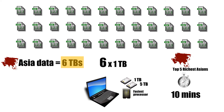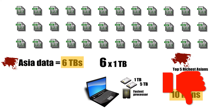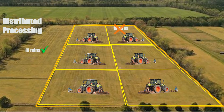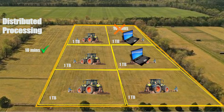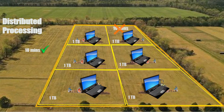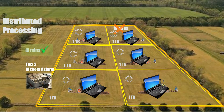This is the fastest processor in the market and it has a record that in 10 minutes it can process a maximum of one terabyte of data. Do you think one machine can process six terabytes in 10 minutes? It is impossible. Think of each portion of the field as one terabyte of data and each tractor as a laptop or machine. Each machine can process one terabyte in 10 minutes, so we start these machines simultaneously and after 10 minutes we'll have the top five richest Asians. This is called distributed data processing — distributing the processing of data among different machines working simultaneously to process large amounts of data in less time.